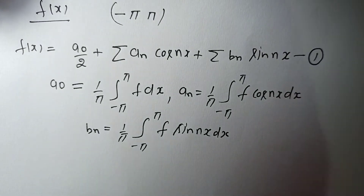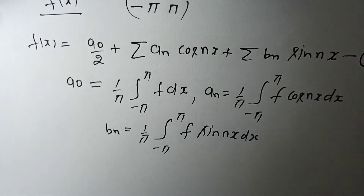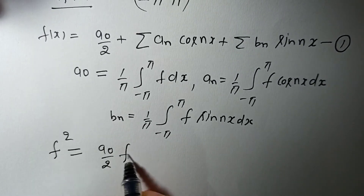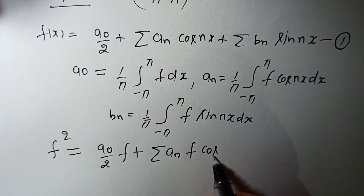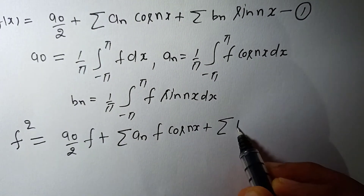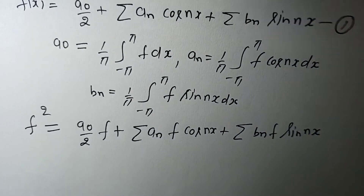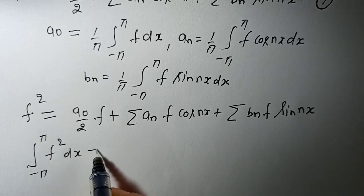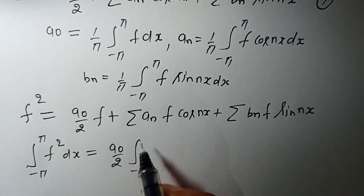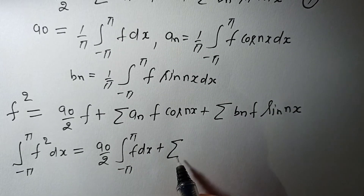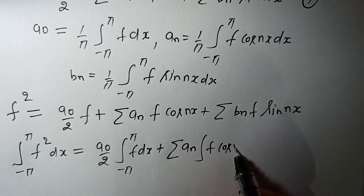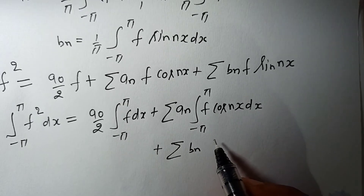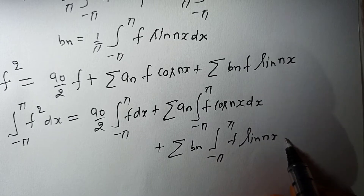Now, in that Fourier series, we multiply by f and integrate from -π to +π. So we get: f² = (a₀/2)f + Σ aₙ f·cos(nx) + Σ bₙ f·sin(nx). Integrating from -π to +π gives: ∫₋π^π f² dx = (a₀/2)∫₋π^π f dx + Σ aₙ ∫₋π^π f·cos(nx) dx + Σ bₙ ∫₋π^π f·sin(nx) dx.